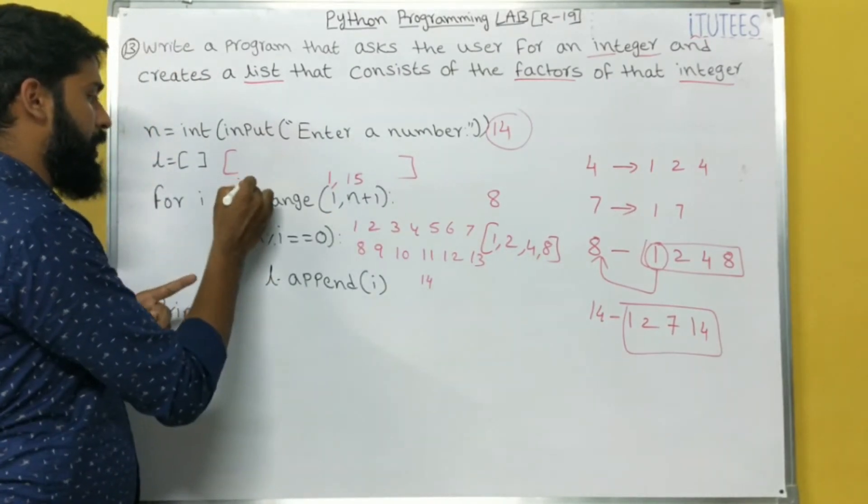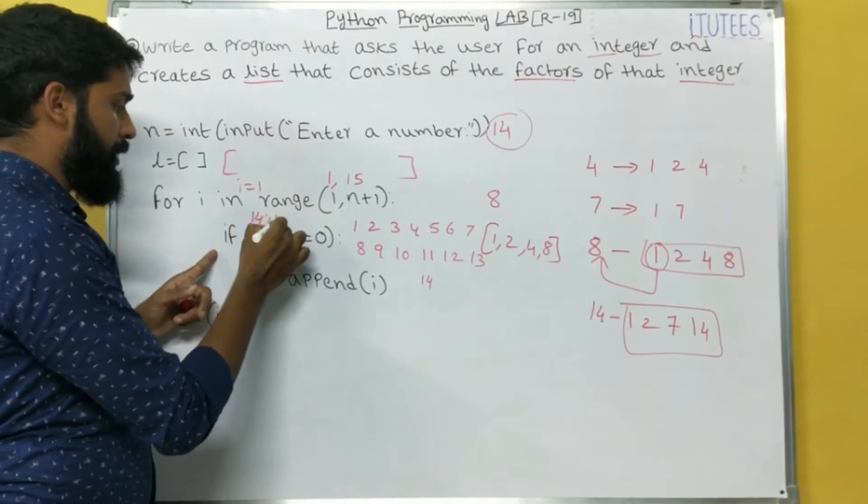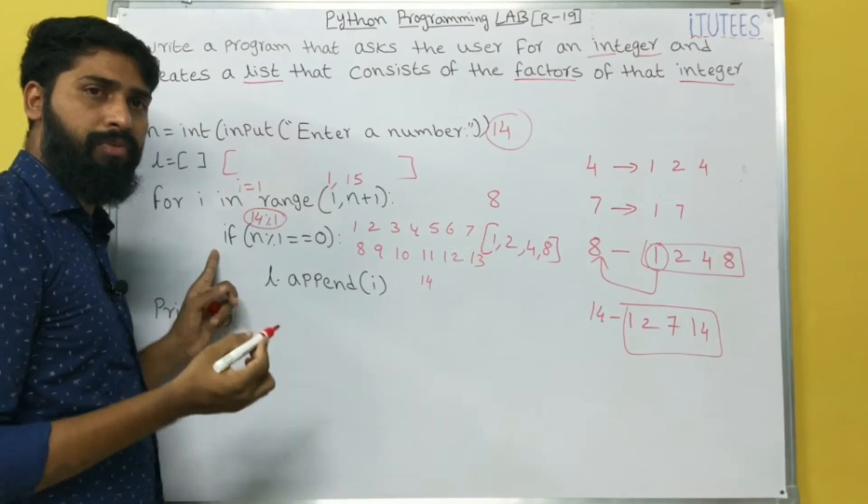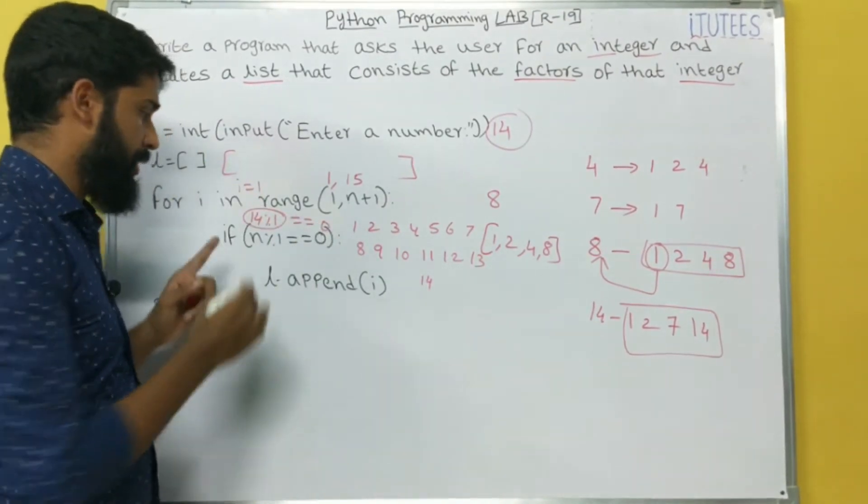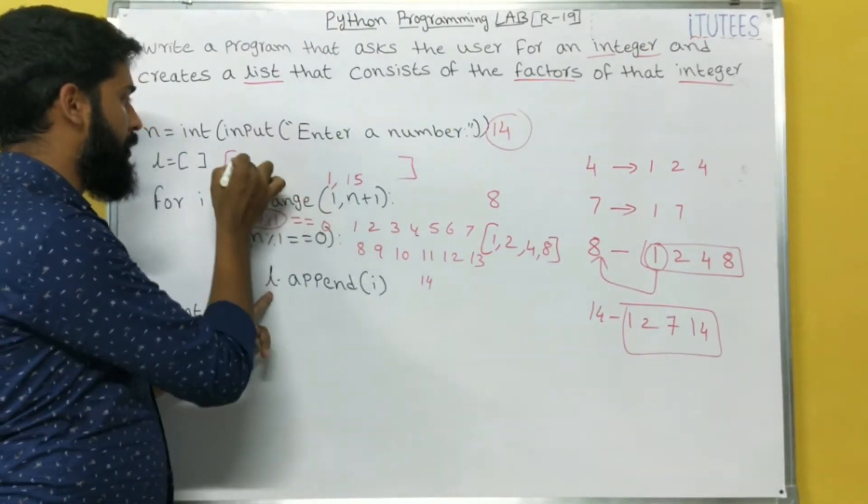So what is i value initially? 1. What is the condition? 14 percentage 1. That means the percentage operator is used to find the remainder. If it is equals to 0, yes, it is equals to 0. So l dot append 1. That means 1 is appended here.